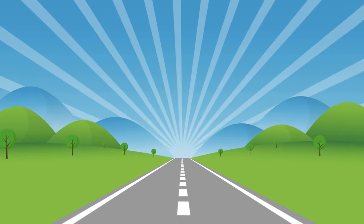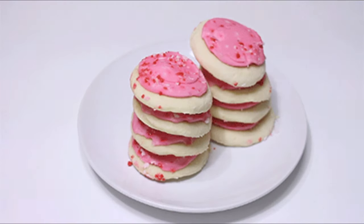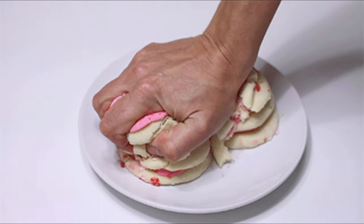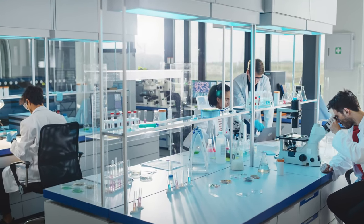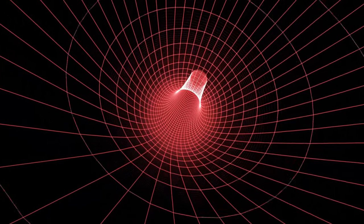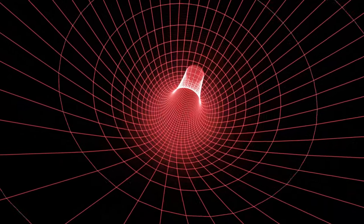But as you flew closer to this strange spot, you'd be stretched in some directions and squished in others, a process that scientists call spaghettification. This is because the black hole's gravity compresses your body horizontally while pulling it like taffy in the vertical direction.